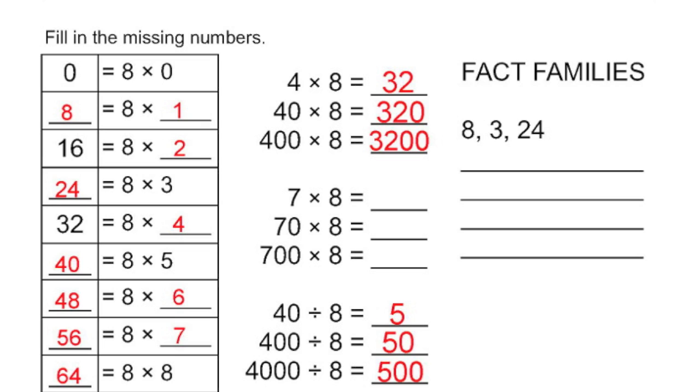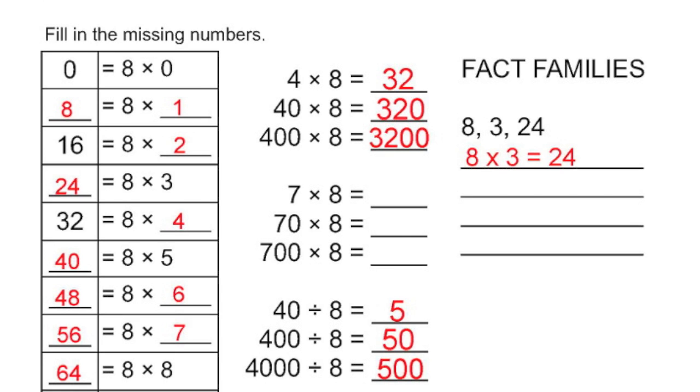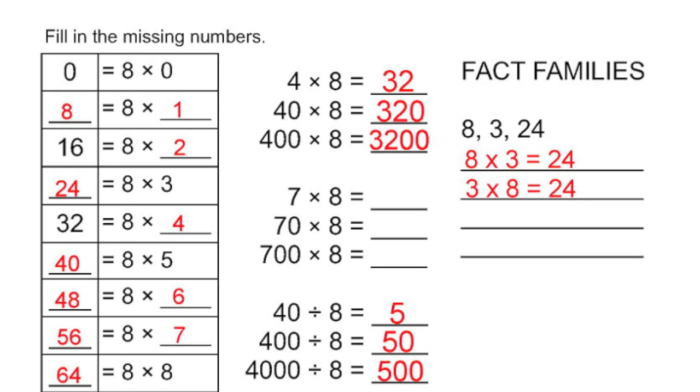Let's do the fact families now. I see 8, 3, and 24. So I know one of my fact families is going to be 8 times 3 equals 24. And since multiplication can go either way, it doesn't matter which one goes first, just like addition. 8 times 3 is 24, so also, 3 times 8 equals 24.